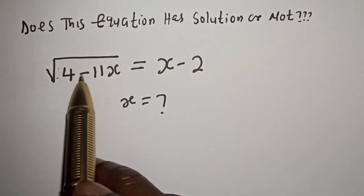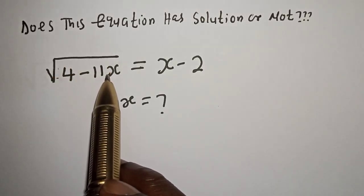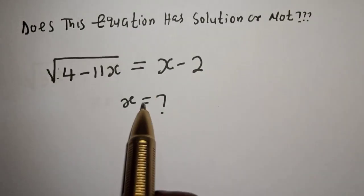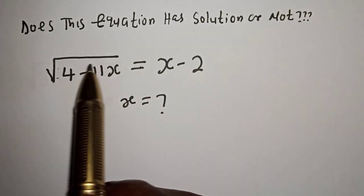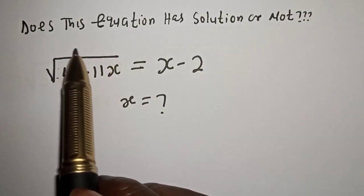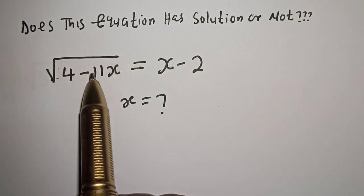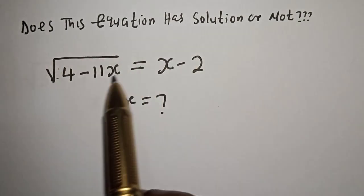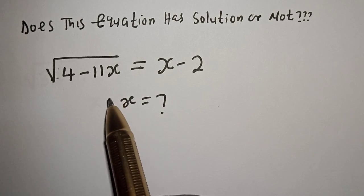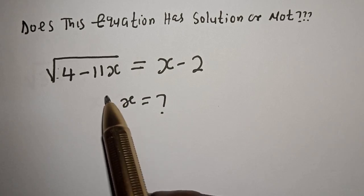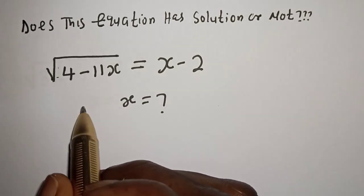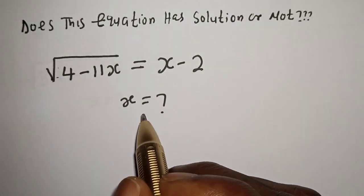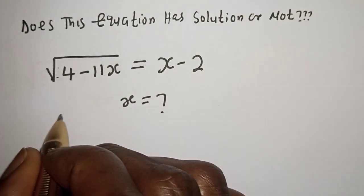The square root of 4 minus 11x is equal to x minus 2. What is the value of x? Welcome to my class. In this class we quickly want to know whether this equation has a solution or not, and we're going to solve and prove to confirm the value of x. But before we proceed, please don't forget to like, share, comment, and subscribe.